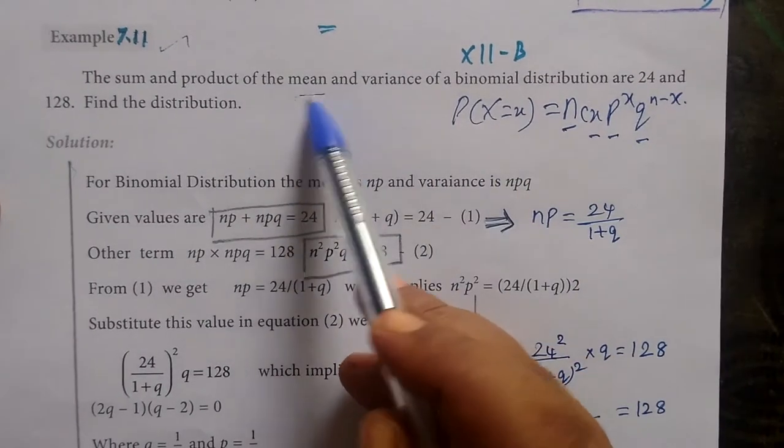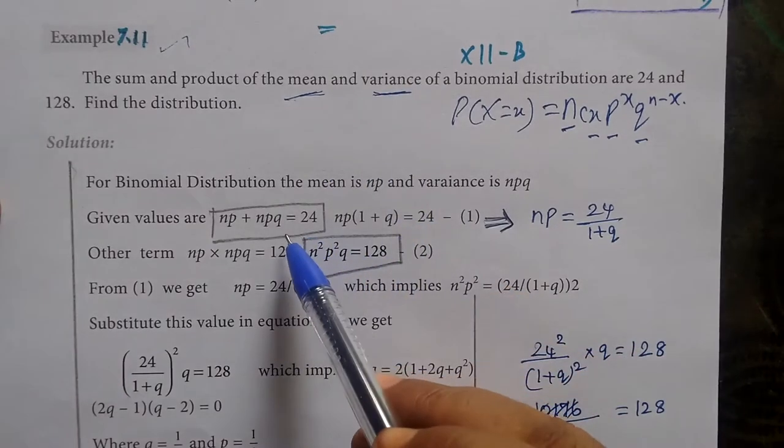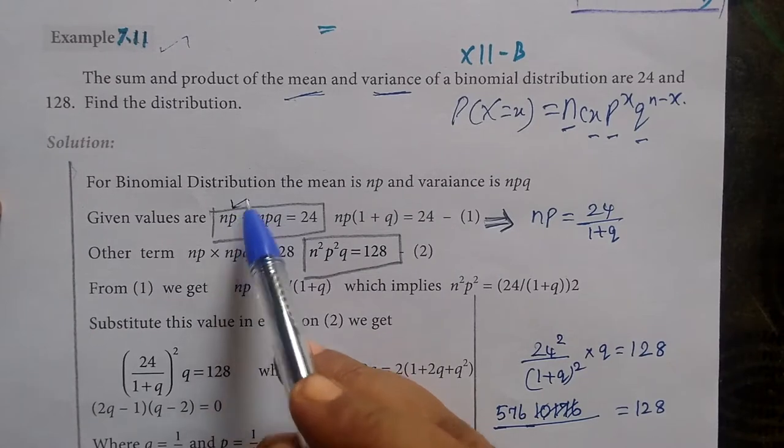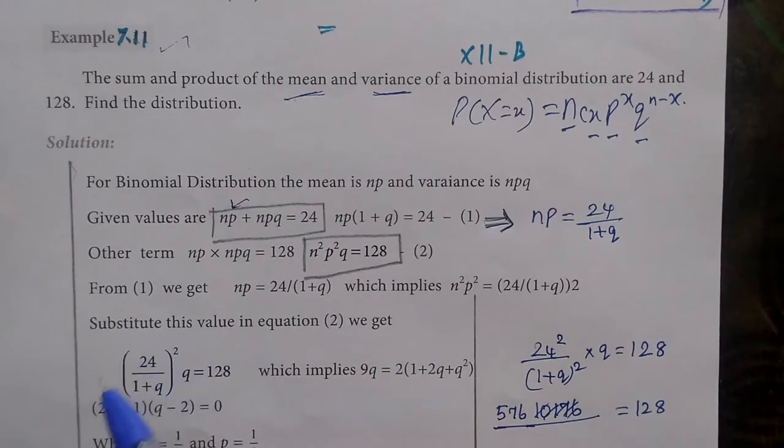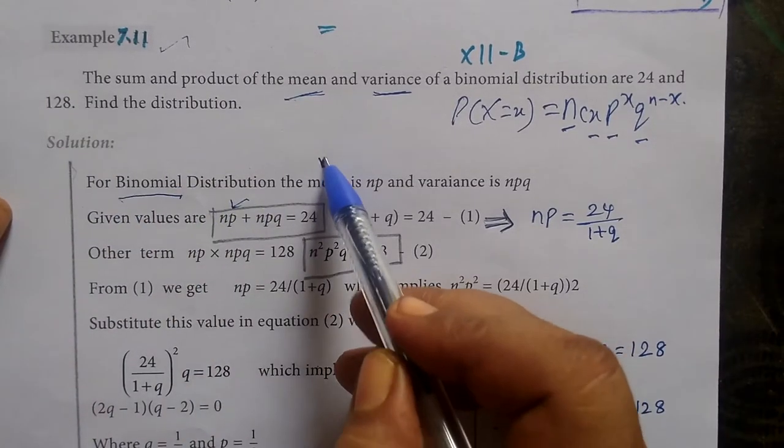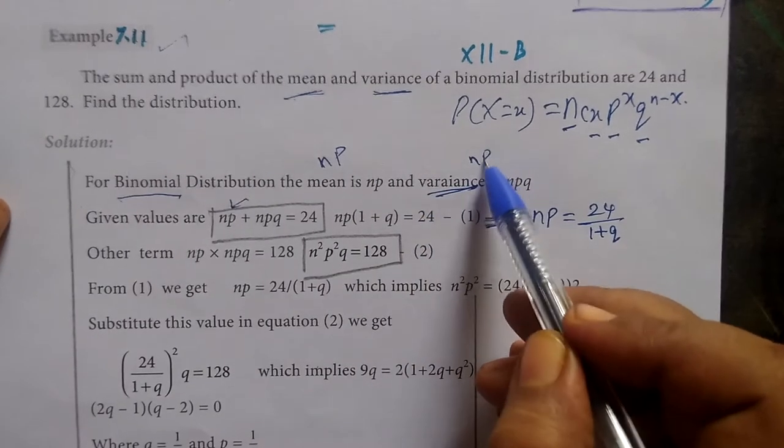You are given mean and variance. We know the formula in a binomial distribution: the mean value is np, then variance is npq.